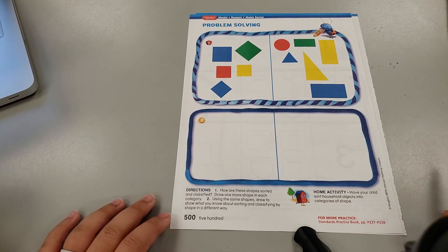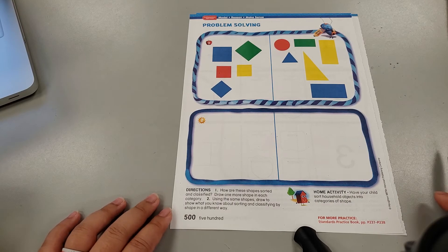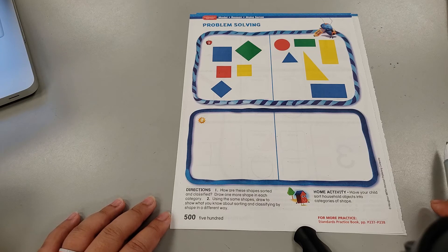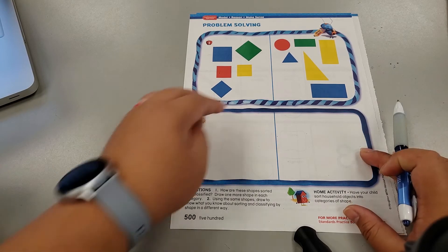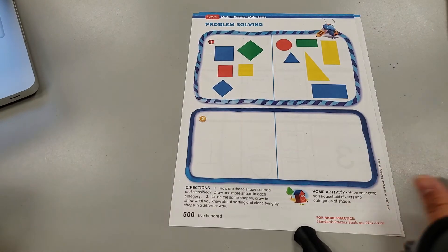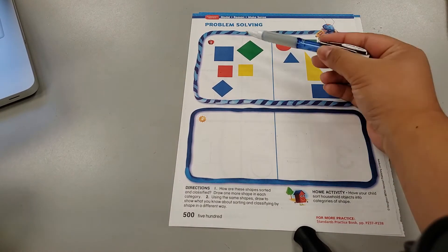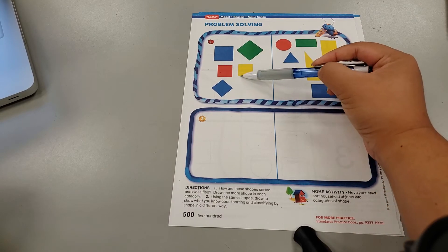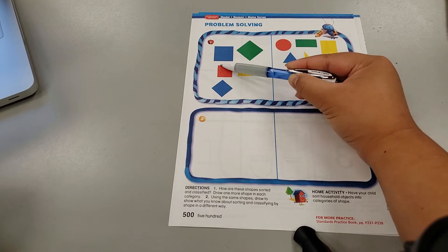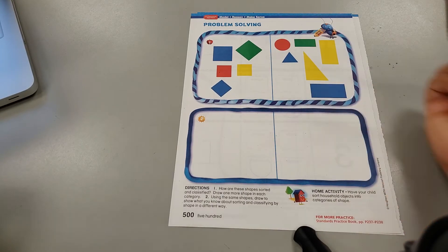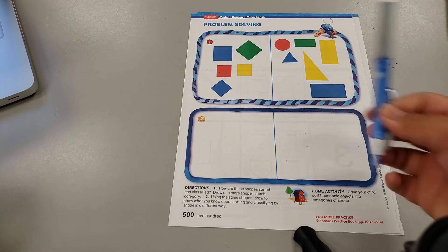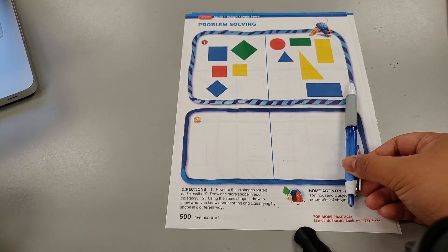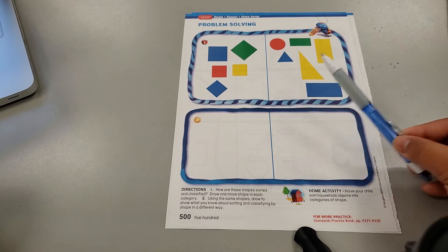All right. Now the page came up with their own sorting mat. So let's think. How did they sort these shapes. Now it's not by color. If you remember yesterday, all the shapes on this side were red. But I notice that all of these shapes have sides that are the same length. So this must be a sorting mat that has squares and not squares.